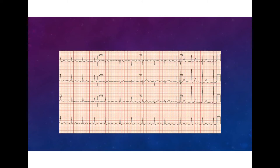Not all irregularly irregular rhythms with narrow complex QRS complexes are atrial fibrillation. Here's an example of another narrow complex irregularly irregular rhythm at around 84 beats per minute. If we look at the atrial activity here, we see there is actually consistent atrial activity — almost a sinusoidal pattern consistently repeating itself between the QRS complexes. That's characteristic of atrial flutter. Normally atrial flutter is a pretty regular rhythm, but when there's variable AV block, some flutter waves don't get conducted as quickly as others, leading to irregularity — this is atrial flutter with variable AV block.